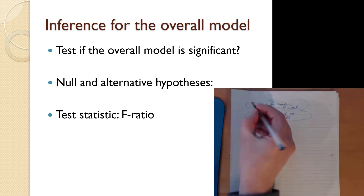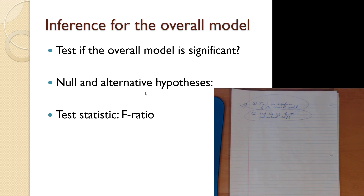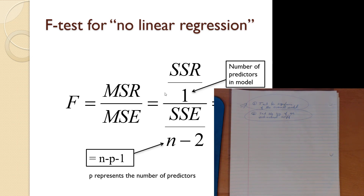Right now we're going to start off with the test for the overall model — inference for the overall model. It still has the same six-step procedure. There's a null and an alternative hypothesis, and of course, as with every test, there's a test statistic. The test statistic for the significance of the overall model is called an F-stat or an F-ratio.